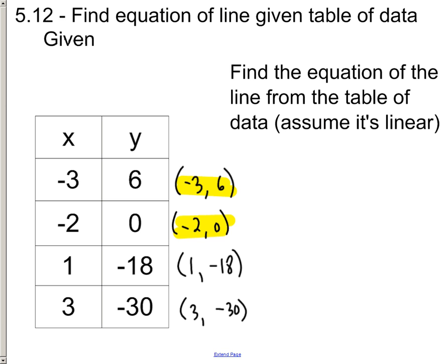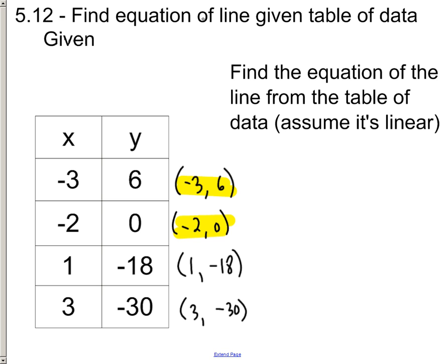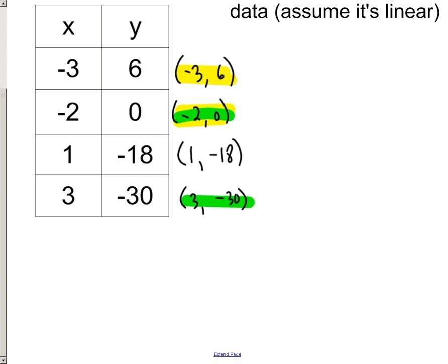So if you didn't want to use these two points because they've got negative numbers, you could always turn around and just choose two other different points. And in this case, let's use 3 and negative 30, and let's use negative 2, 0. And let's just go through and do that.